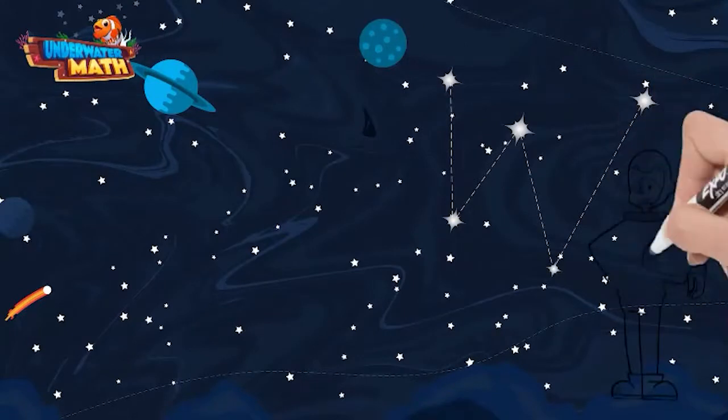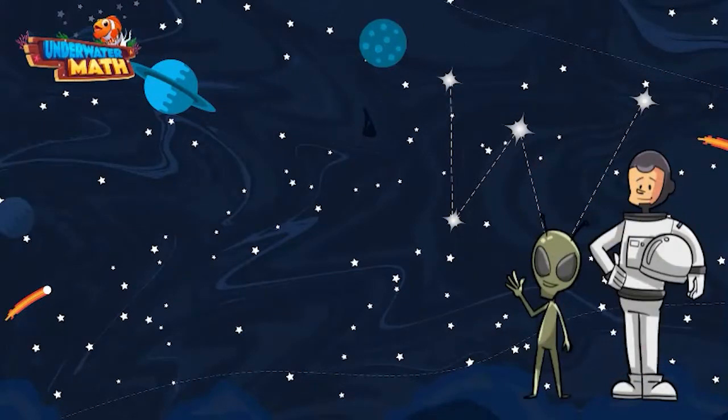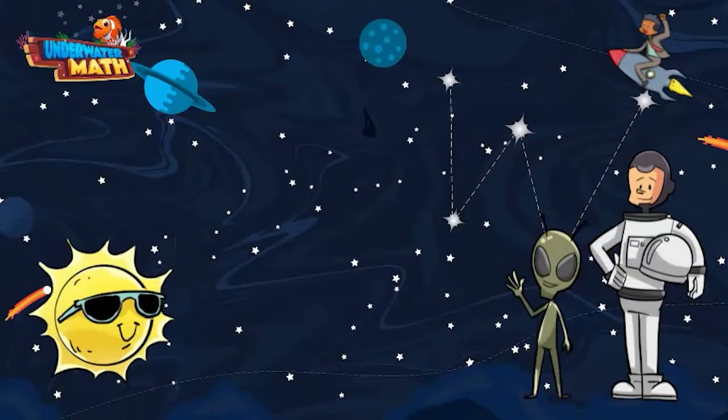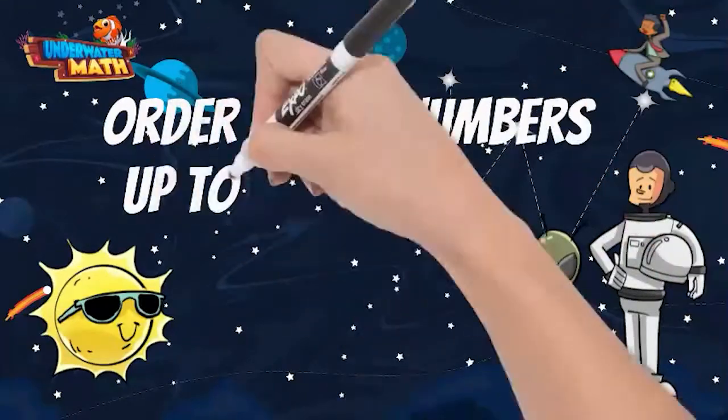Welcome to underwater math. I'm Mastronaut Steve and this is my alien friend Lenny. Marcus is up there riding around on his rocket. In case you haven't noticed, we are practicing math in space today. Let's learn how to order numbers up to 1 billion.